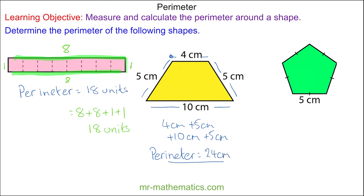When we know the lengths are equal we can use a short multiplication method. With the green pentagon we know each of these lengths are equal because they are marked with a dash. This means we have 5 lots of 5 centimeters which is 25 centimeters.